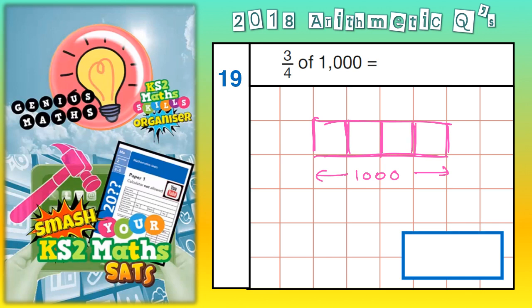each of the four squares would be a quarter. Now, if you split it in half, that would be five hundred in each half, because two lots of five hundred makes a thousand.